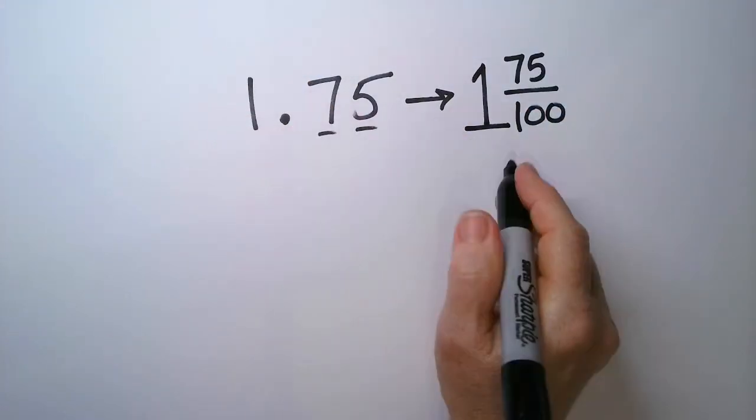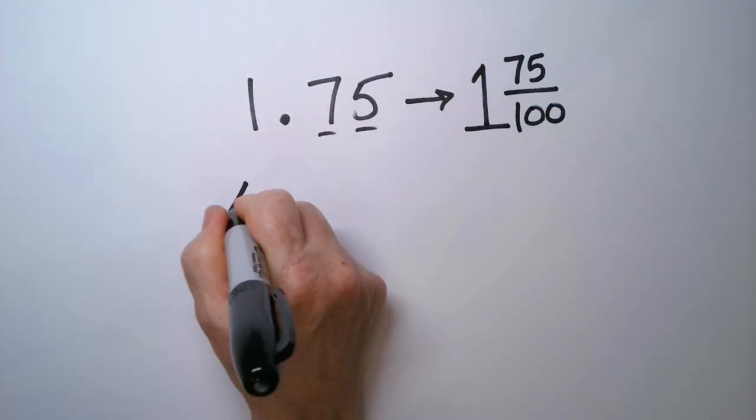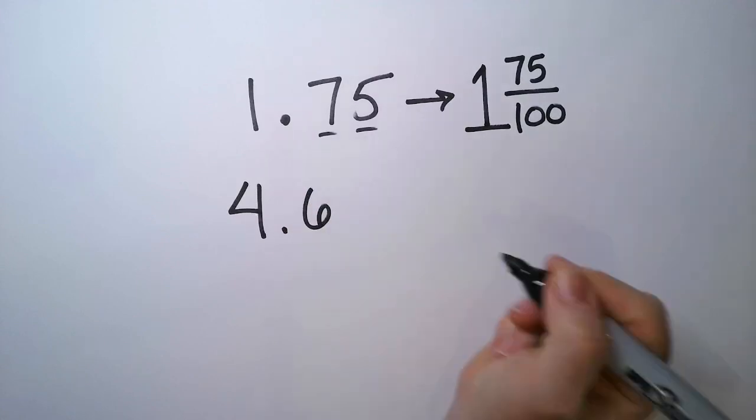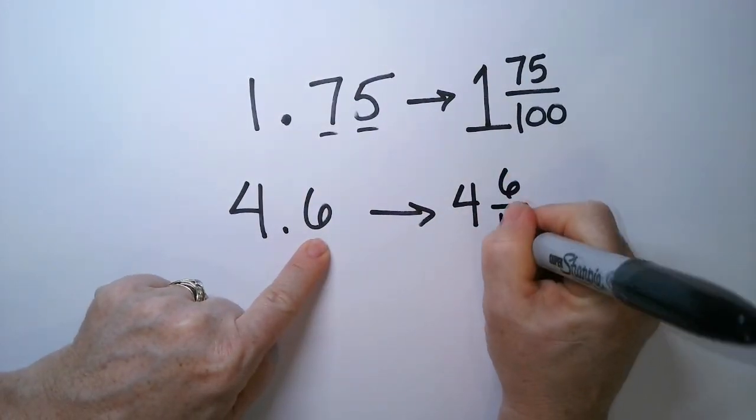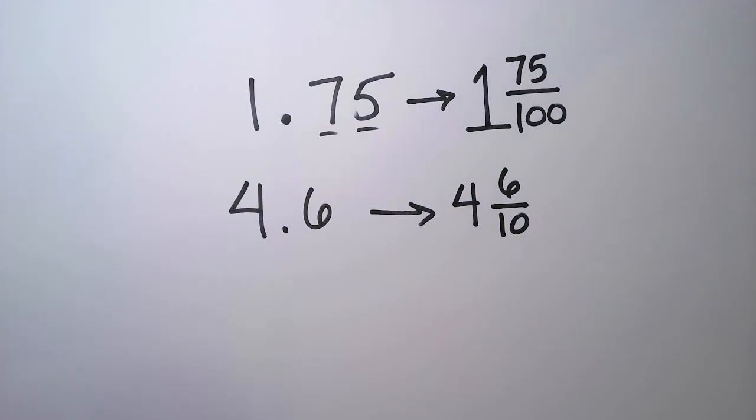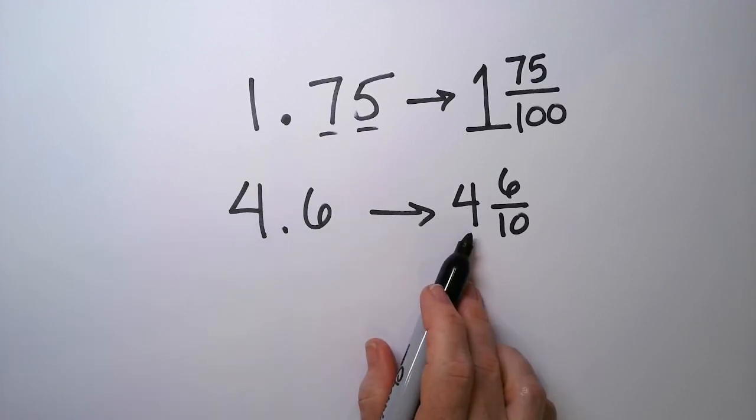So whatever's in front of the decimal, that's still a whole number. So if I have 4.6, that's going to be 4 and 6 tenths. So the name of this game is you've got to know what the name of the place value is to the right of the decimal point. Anything to the left, that's the whole number.